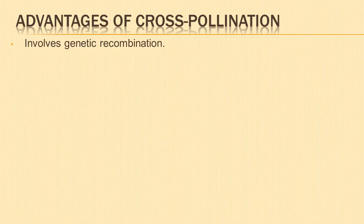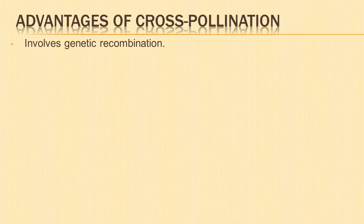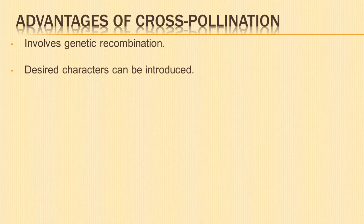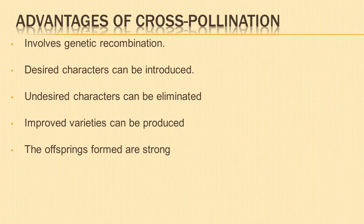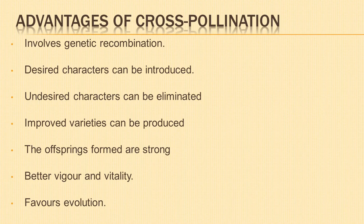Advantages of cross-pollination: It involves genetic recombination and brings about variation. Desired characters can be introduced in the offspring. Undesired characters can be eliminated. Improved varieties or hybrids can be produced. The offsprings formed are strong with desirable characteristics like disease resistance and can withstand climatic variations. Better vigor and vitality are desirable characteristics of the offspring. Cross-pollination favors the process of evolution and results in increase in genetic diversity.